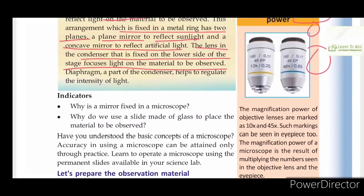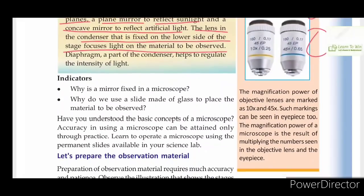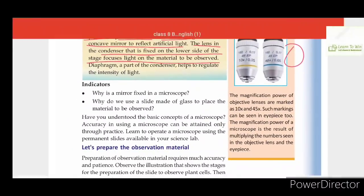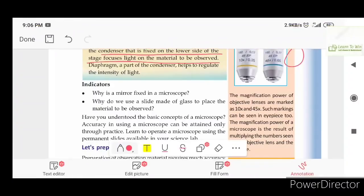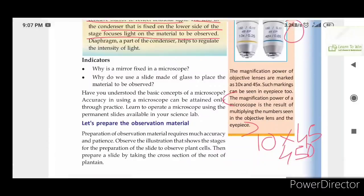The objective lenses are marked 10x and 45x. The eyepiece also has a marking — for example, 10x. The magnification power of the microscope is the result of multiplying the number seen on the objective lens by the number on the eyepiece. If the objective lens is 10x and the eyepiece is 45x, then 10 × 45 = 450. That is the magnification power.